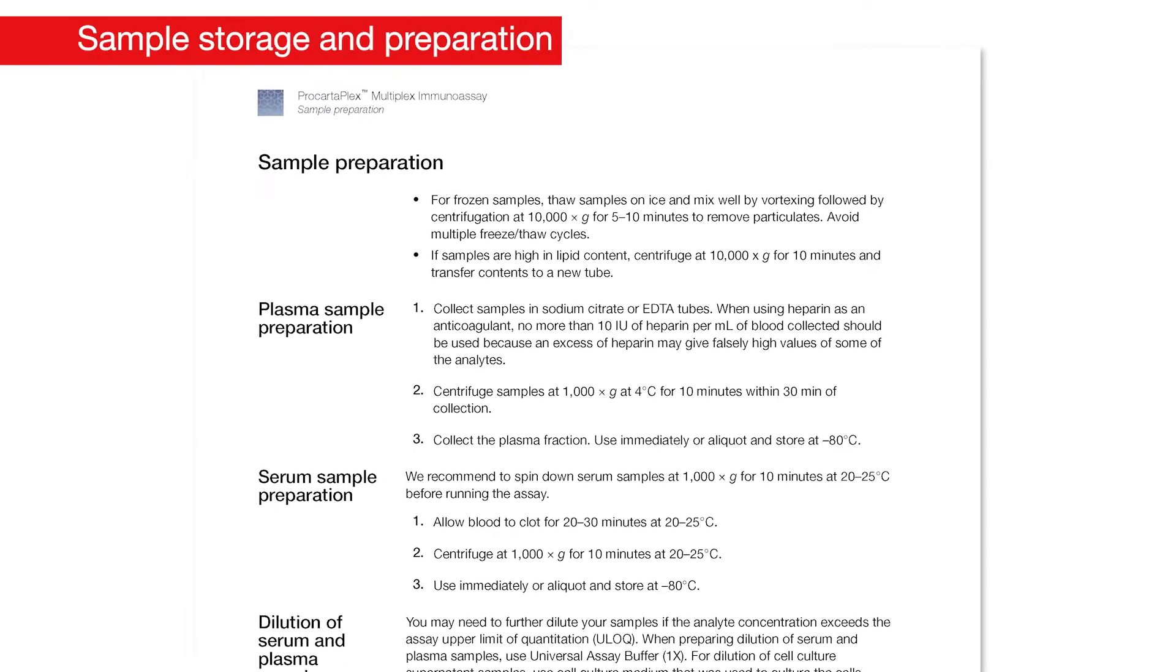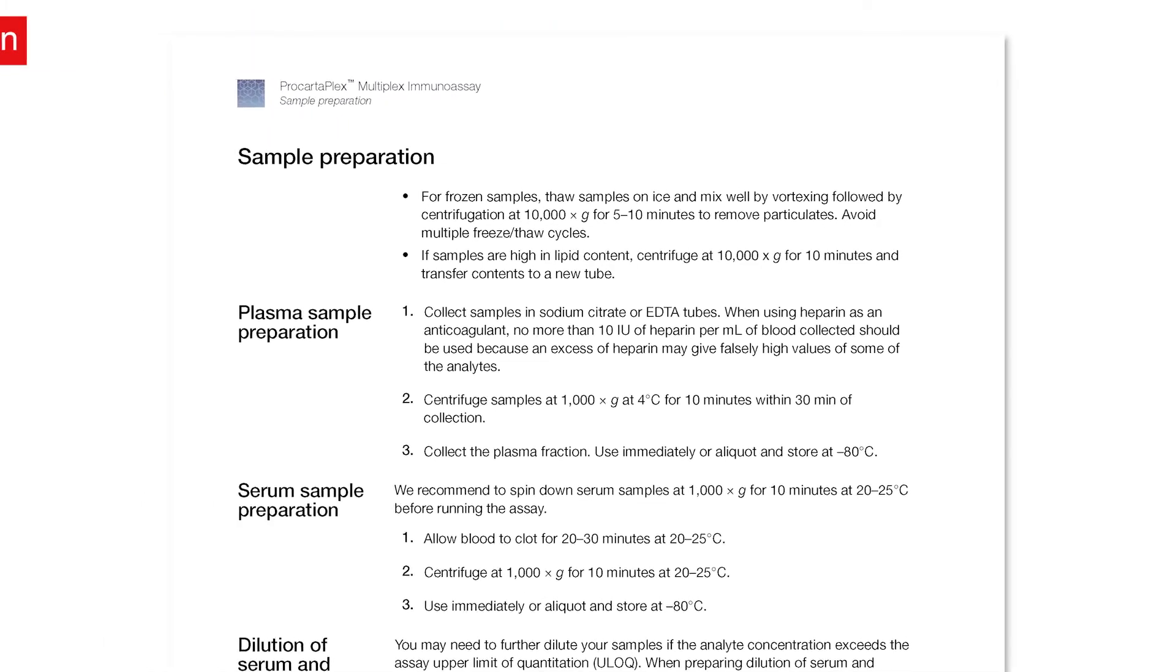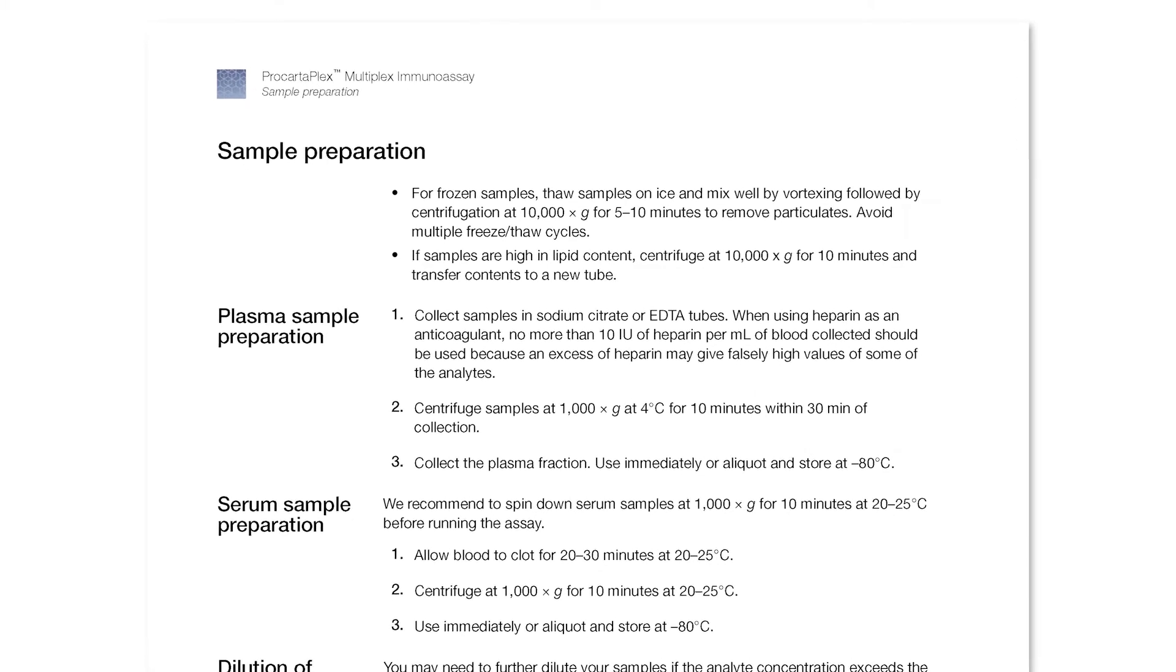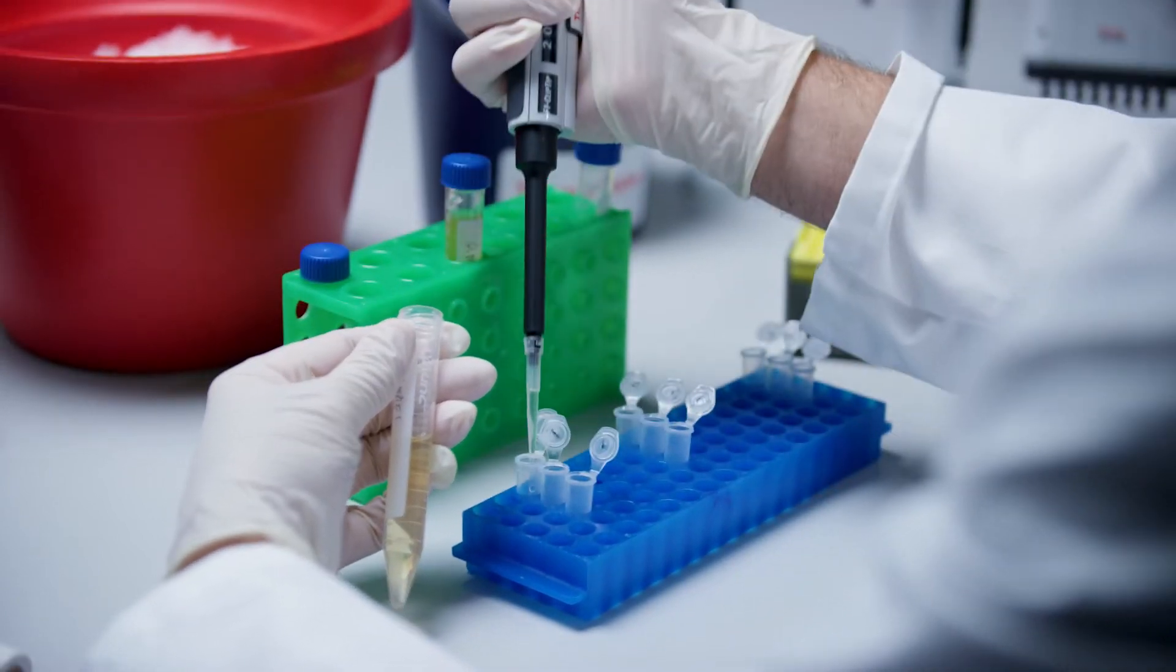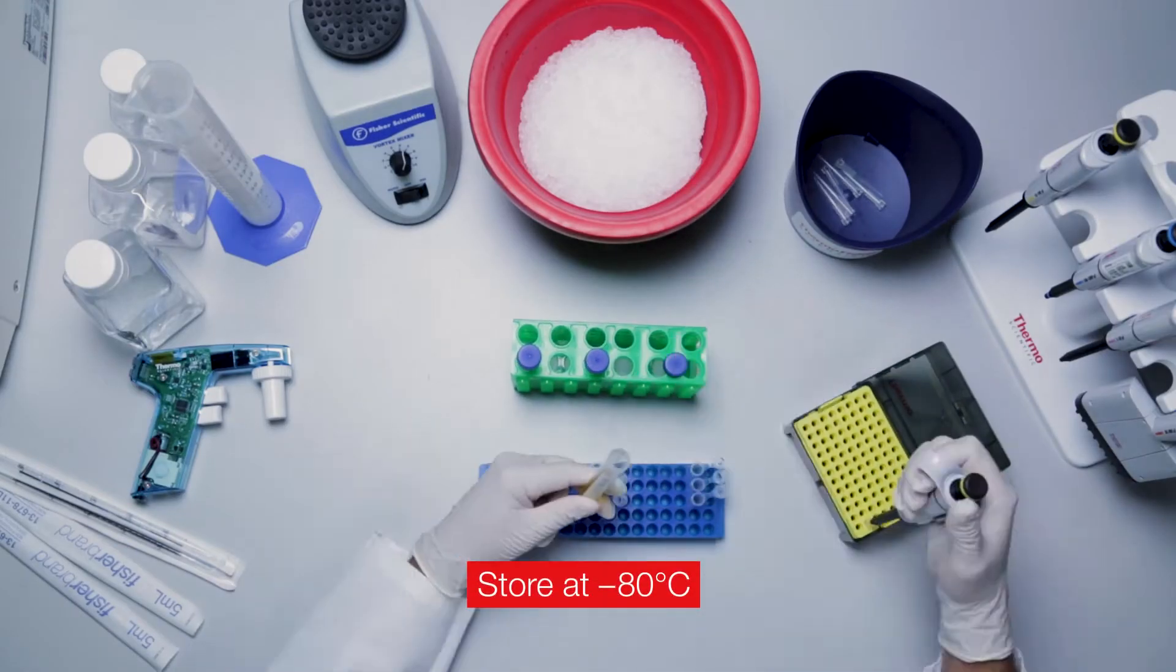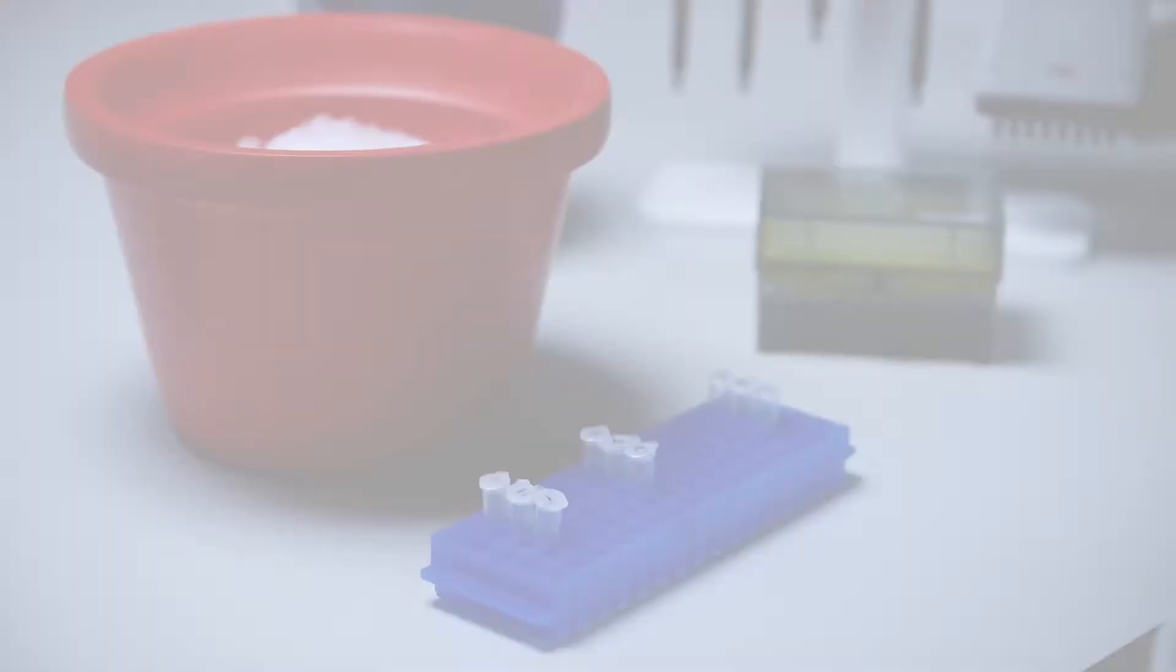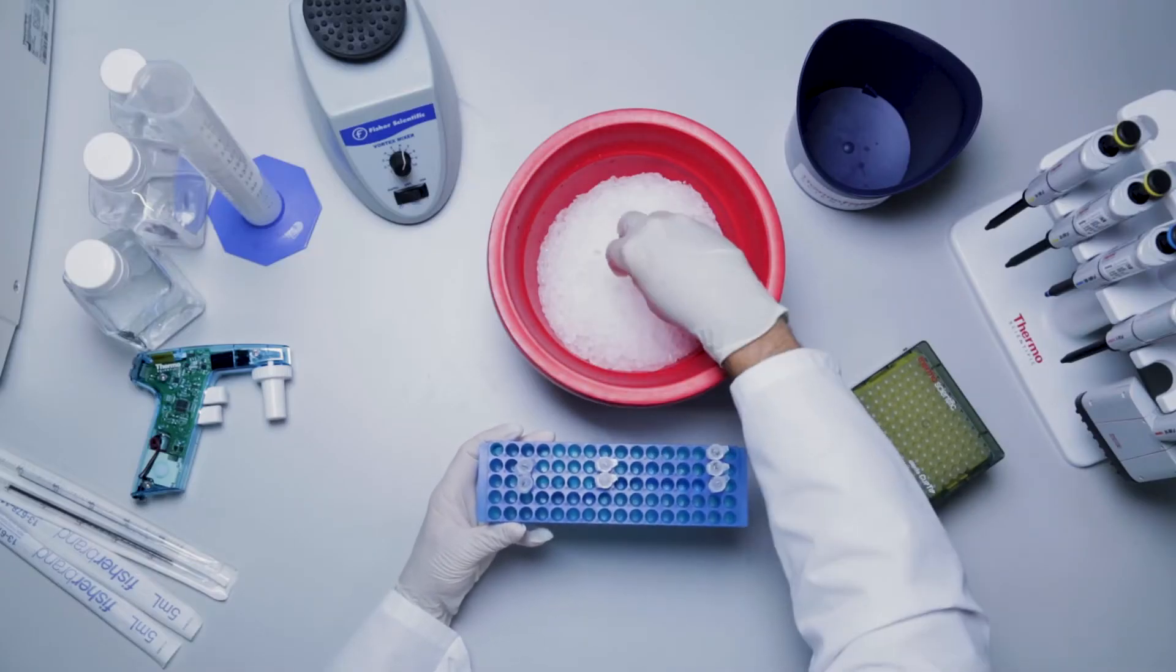Serum and plasma samples should be prepared using established protocols. Refer to the sample preparation section of your ProCartaPlex assay user guide. If the samples are not used immediately, aliquot the samples and store at -80°C. Before running the assay, remove the samples from the freezer and thaw them on ice.